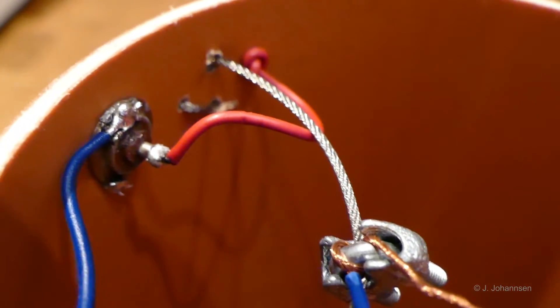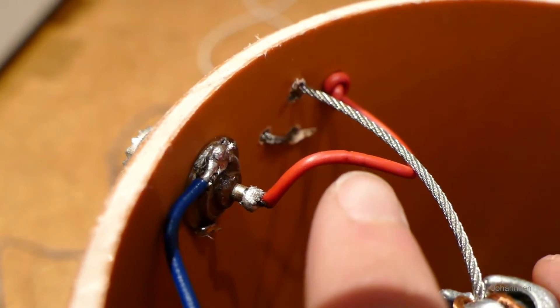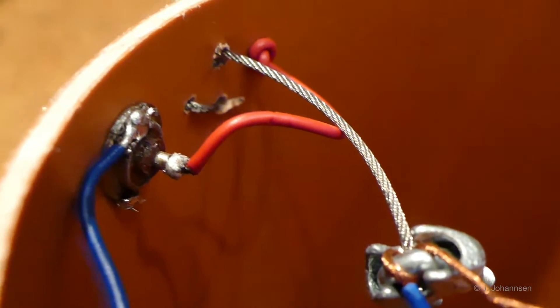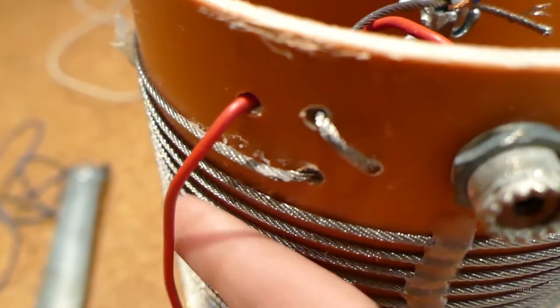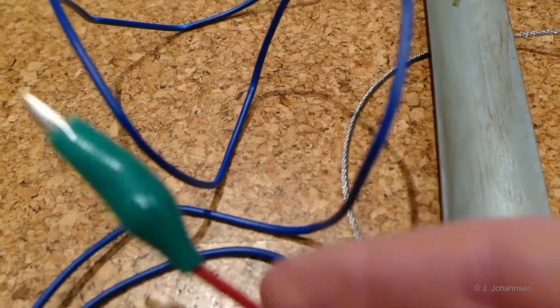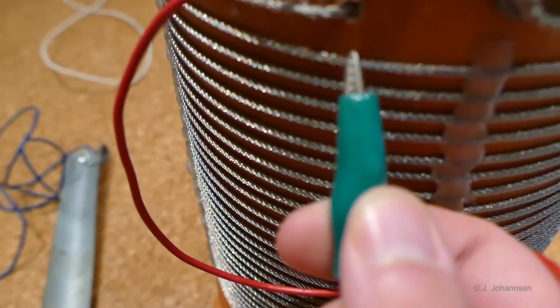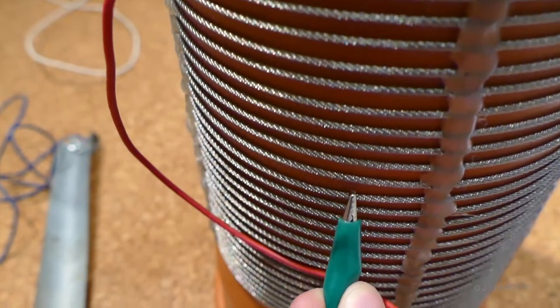Here now we can see the red cable. This red cable is connected and soldered with the inner part of our coax cable. You can see I passed it through and out, and here at the end I soldered a crocodile clamp. With this crocodile clamp we have to search for the best resonance point while we are looking at our analyzer and looking for the best SWR.